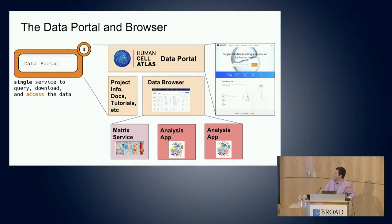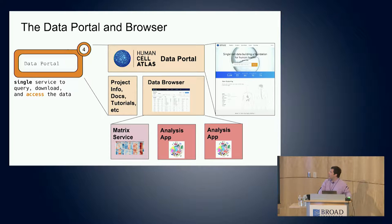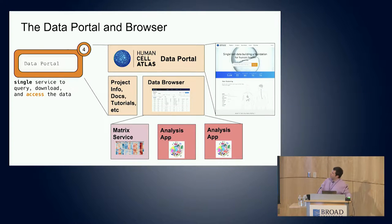The data browser is linked to the matrix service and this provides a very convenient way to generate a gene by cell matrix on the fly. In 2019, what we're planning on working on is integration with many different analysis apps - analysis and visualization web applications developed in the community as an ecosystem of interesting and useful tools that once a user does their search in the data browser, they can hand that search result off to these apps for further work.